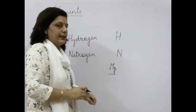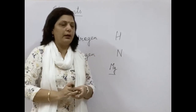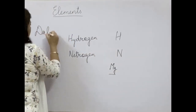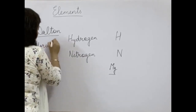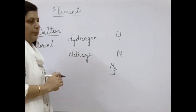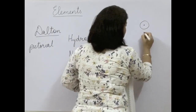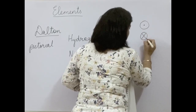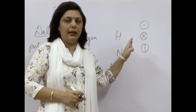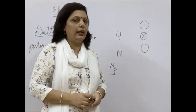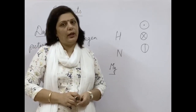I'll explain how it is easy for you to learn. Earlier there was a method designed by Dalton. Dalton initially gave a pictorial representation — you had to draw certain pictures to represent a particular element. For hydrogen, you would draw a circle with a dot in the middle; somewhere a circle with a cross; somewhere a circle with a line in between. These were Dalton's ways of representing elements, but again that was a very tedious job.